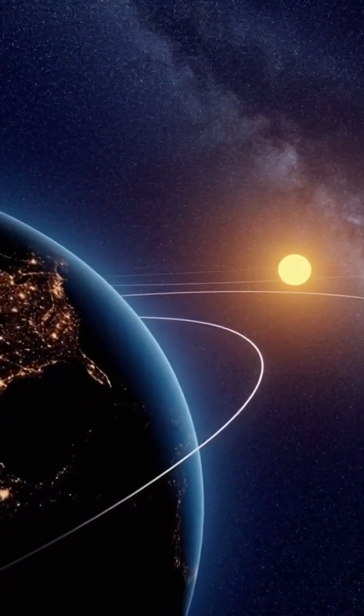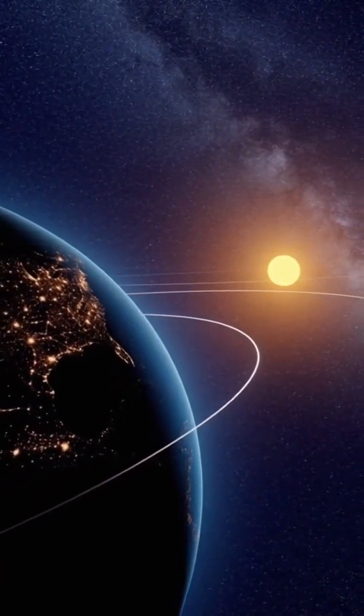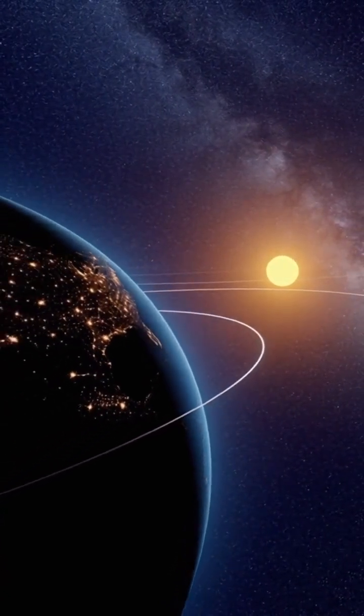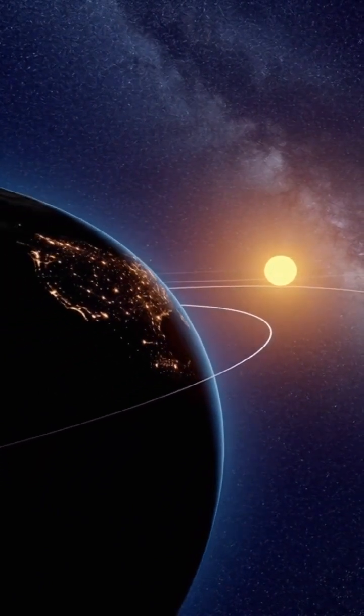Layer 2. Earth orbiting the Sun at 107,000 kilometers per hour. About 30 kilometers every second.